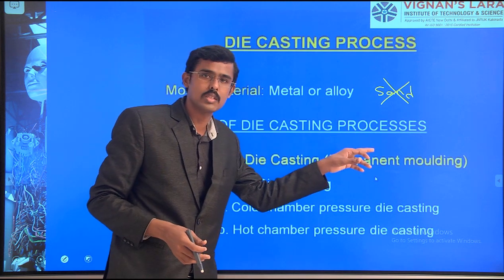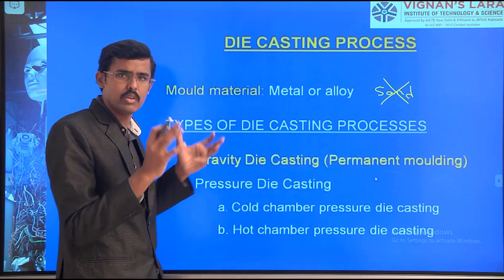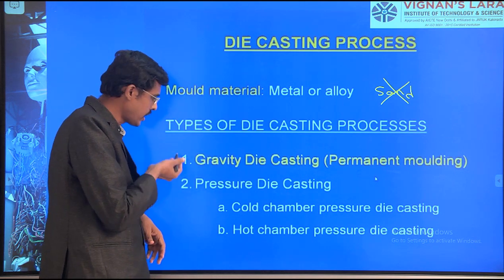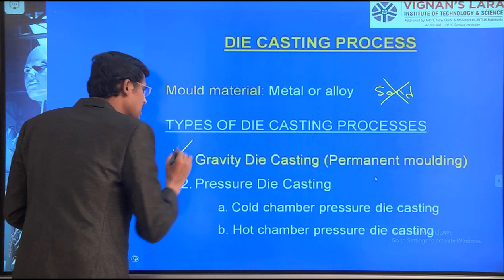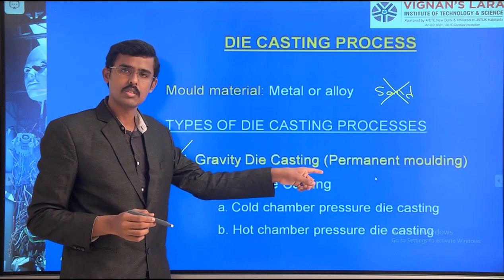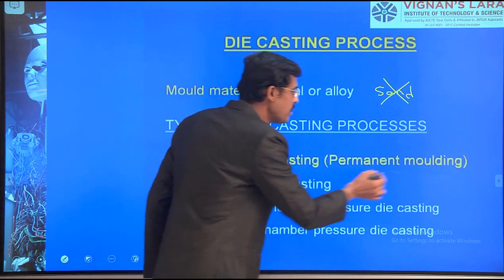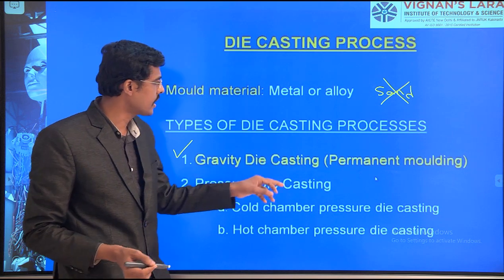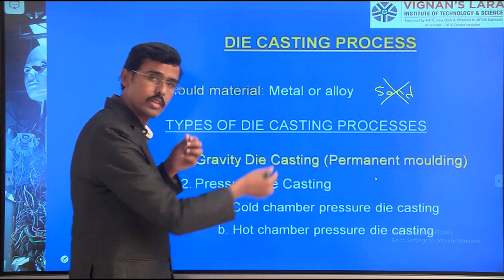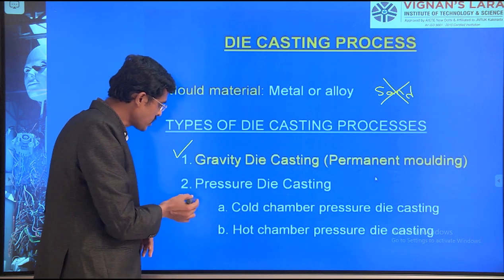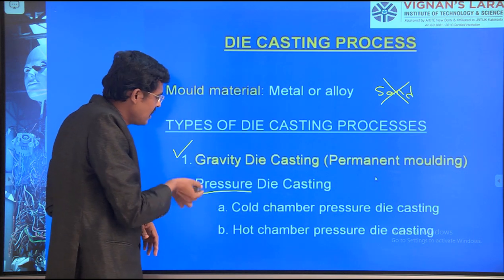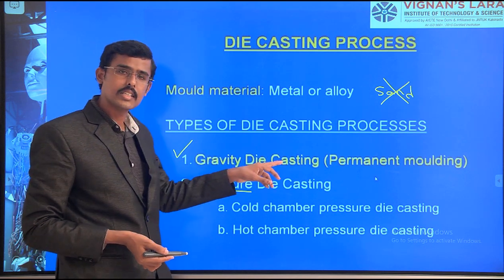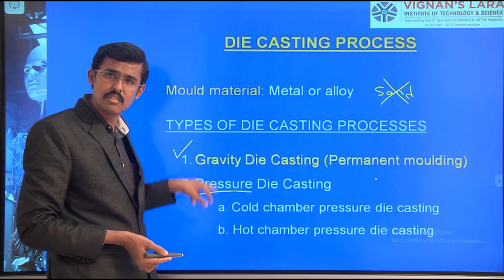There are two types of die casting process. Number one is gravity die casting, also known as permanent molding. Number two is pressure die casting. The difference is in the name: gravity die casting works on the principle of gravity — when we pour the cast metal inside, due to gravity it comes down. In pressure die casting, the metal is injected inside under pressure.